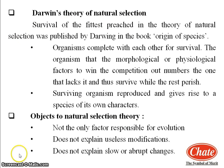Irrespective of all these objections, Darwin's work on evolution has been a milestone. From Darwin's theory of natural selection, we can understand that all organisms compete with each other in a life-threatening manner. In this competition, only those organisms sustain which show modifications essential for winning the competition. Sustaining and selected organisms can perform reproduction and thereby give rise to new species with their own specific characters. This is Darwin's theory of natural selection.